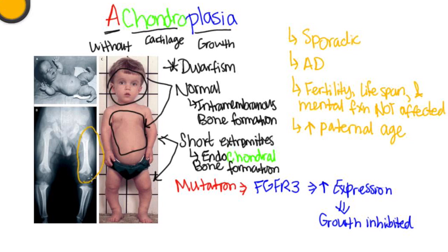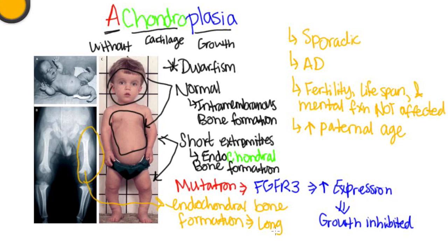Looking at this x-ray, we notice that the long bones have not developed properly. The reason these long bones don't develop properly is because the main mechanism by which long bones grow is endochondral bone formation.